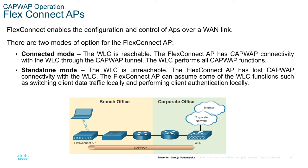In standalone mode, the WLC is unreachable and the FlexConnect AP has lost CAPWAP connectivity with the WLC. The FlexConnect AP can then assume some WLC functions, such as switching client data traffic locally and performing client authentication locally. This is shown in a diagram illustrating a corporate office and a branch office connected by a FlexConnect.